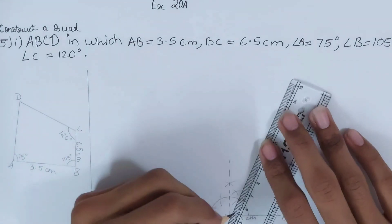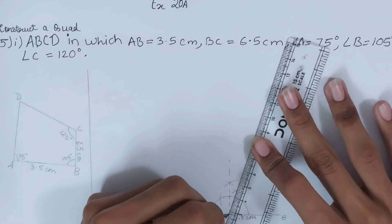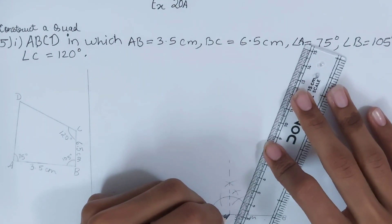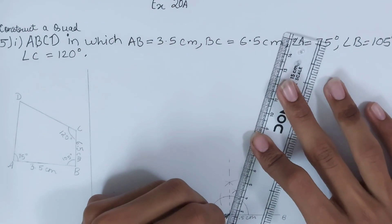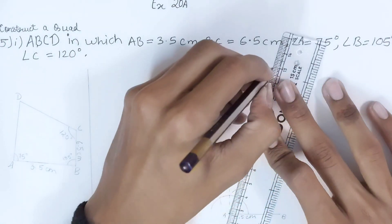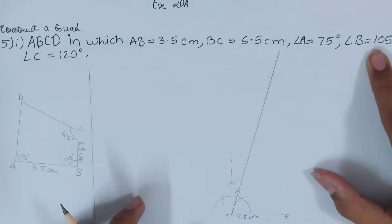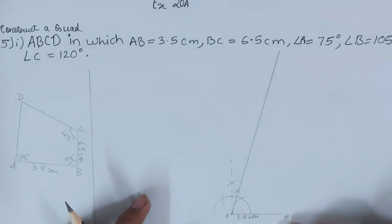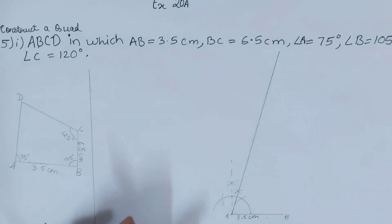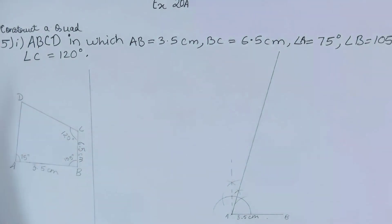Join this 75° point with a ruler and make this line quite long — don't make it short. This is because on the other hand we also have to make angle B = 105° and angle C = 120°. So extend the line from A as far as you can.